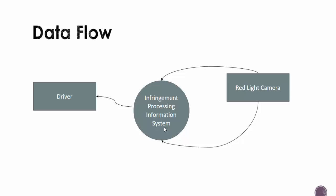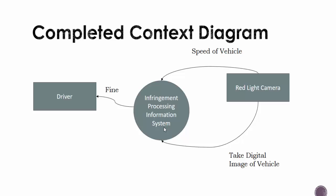We then have to worry about our flow lines, and we have to label everything that goes from one point to the next. It's clear that the red light camera will indicate the speed of the vehicle and put it into the information system, and the red light camera will also take a digital image of the vehicle. Once that's processed, the driver then would receive the fine. Anyway, that's a quick look at how to create a context diagram — hope you learned something and I'll see you next time.